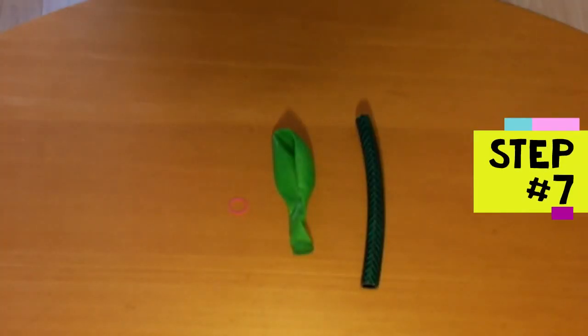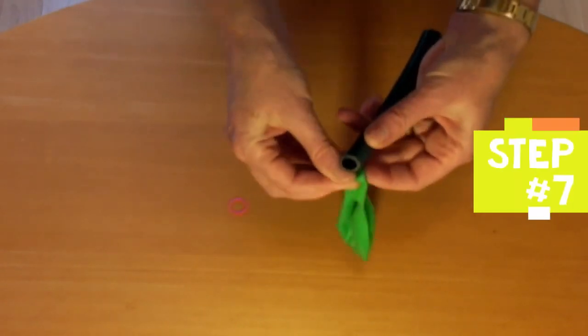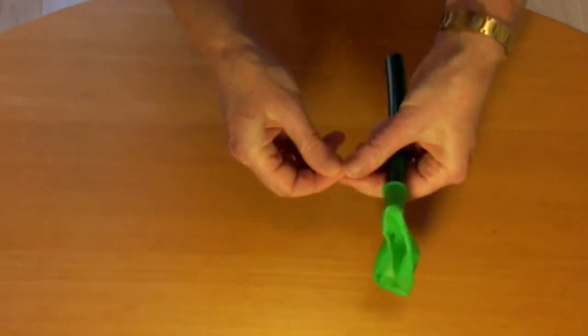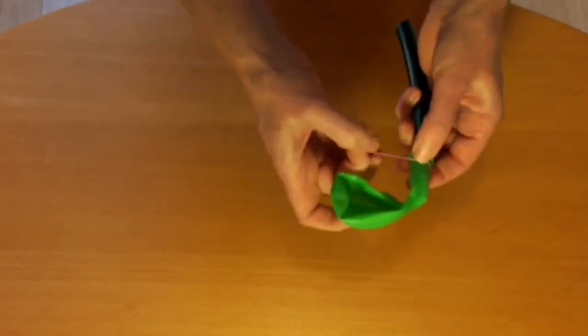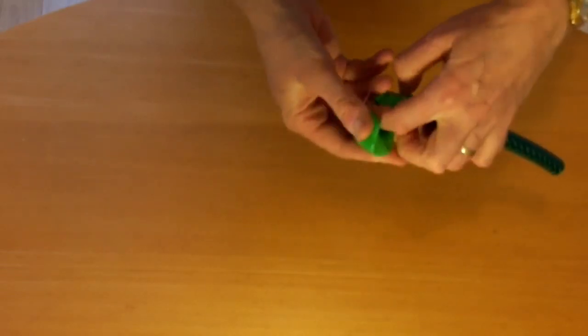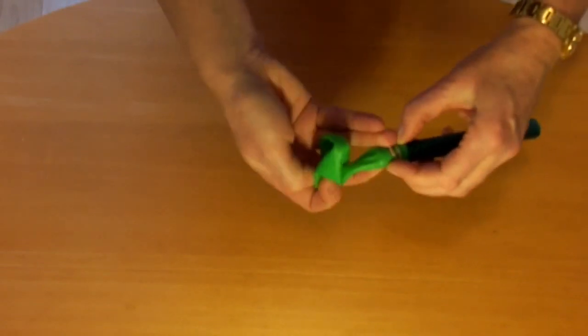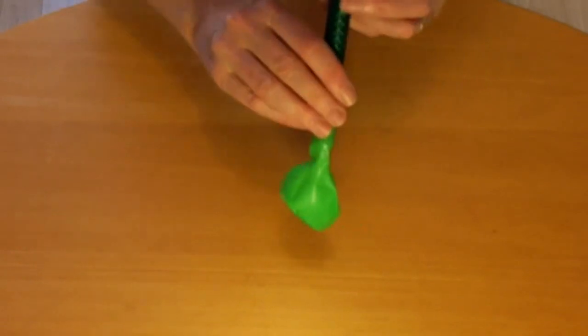Step seven is to attach the balloon. So you slide the balloon over the end of the plastic tube. Then you hold it on with the rubber band so it doesn't fly off when you blow up the balloon. You might need to twist the rubber band a few times so it holds it on firmly. Then you try blowing up the balloon. Make sure it doesn't fly off.